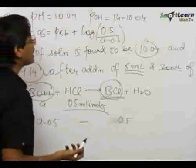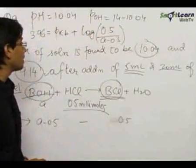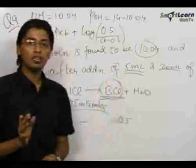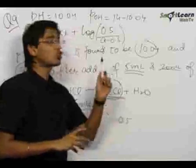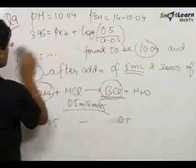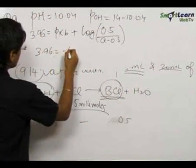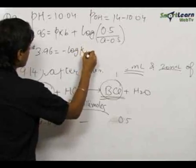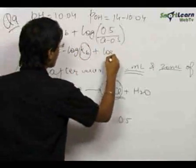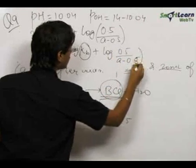Actually we need to take the concentration, but the volume for the flask is 40 ml and hence when we divide this by 40 and this by 40, the 40-40 factor gets cancelled and hence we can take the ratio of the number of moles present at equilibrium. So this is our first equation. PKB can be further written as minus log KB. This is the dissociation constant for the base plus log of 0.5 upon A minus 0.5.